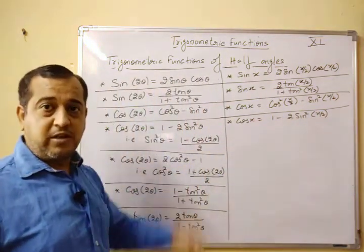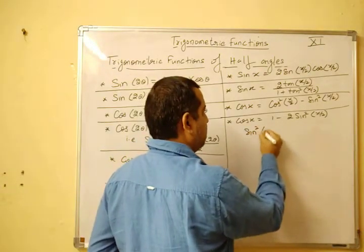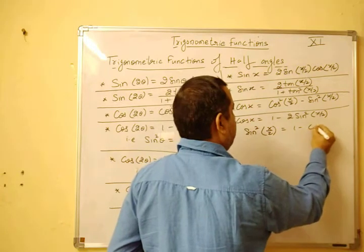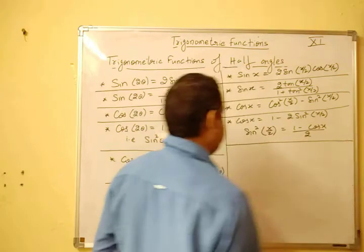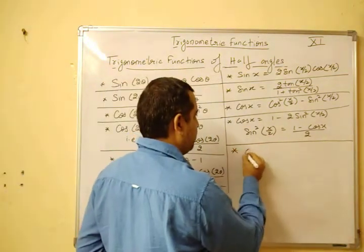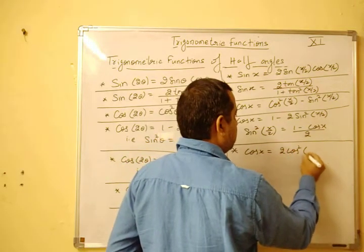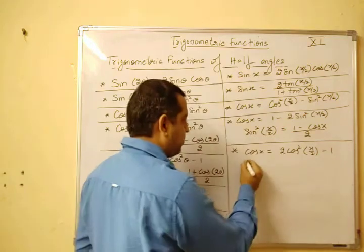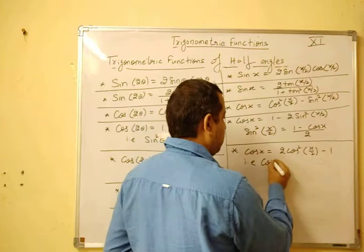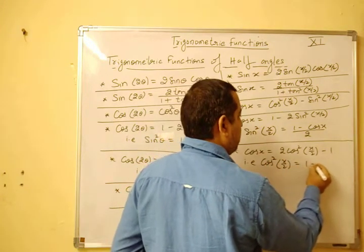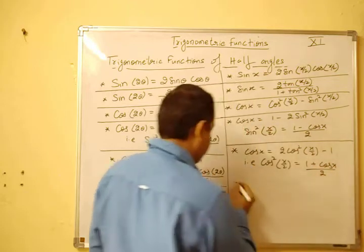But beside this formula, this formula is most important, that is sin square x by 2, this is 1 minus cos of x by 2. Then 2 cos square x by 2 minus 1. Once again beside this, this formula is much important cos square x by 2, this is equal to 1 plus cos of x upon 2.